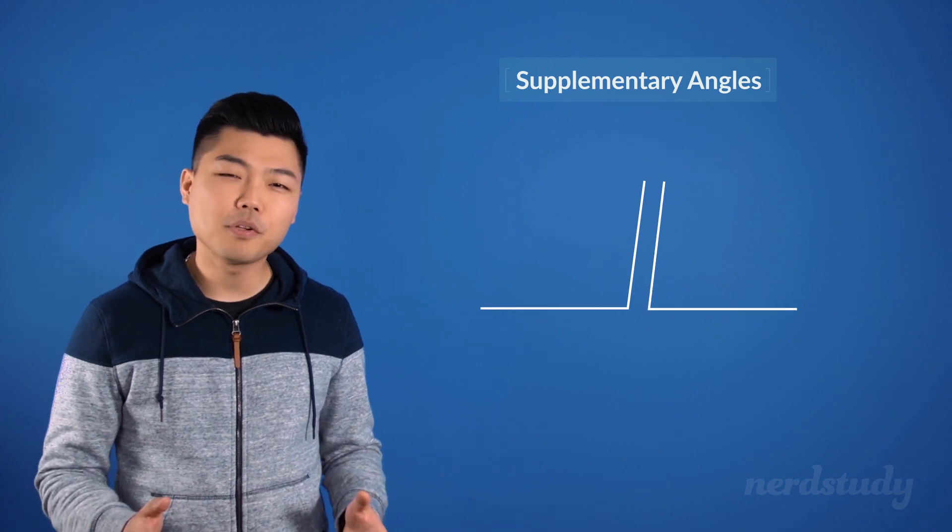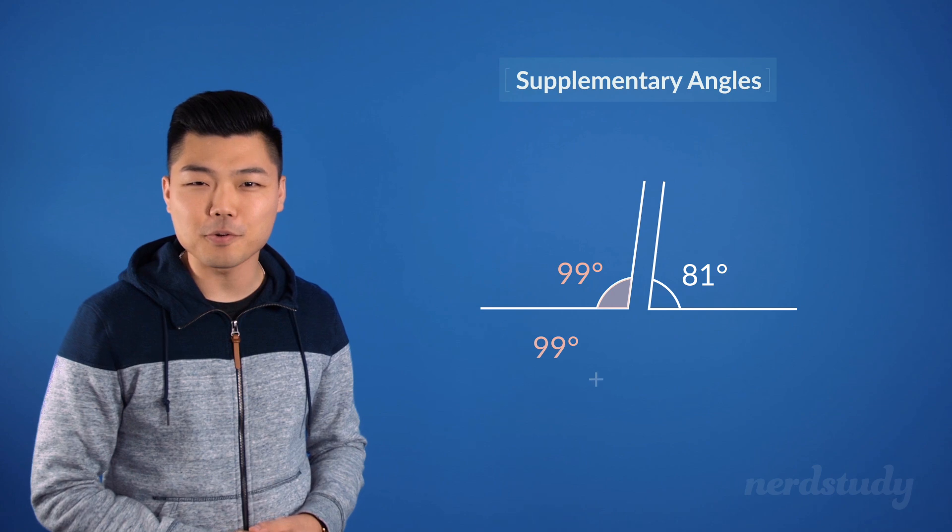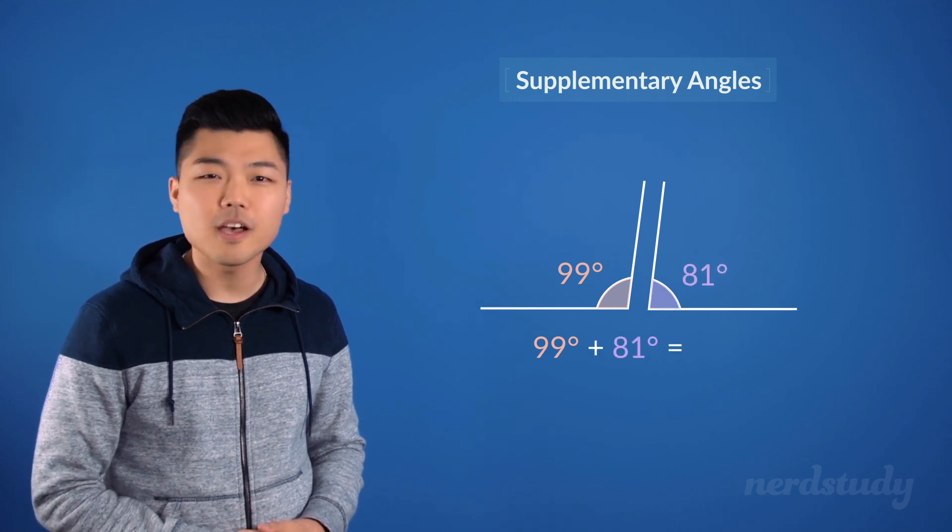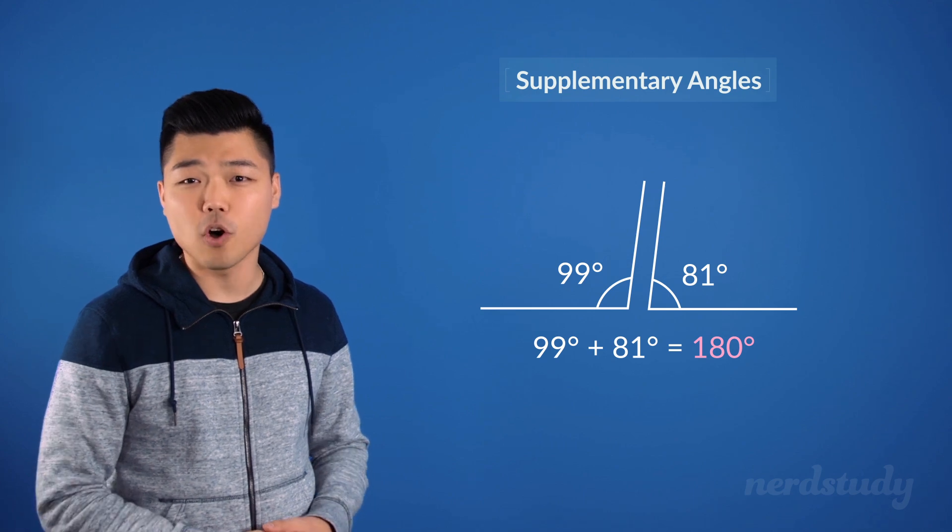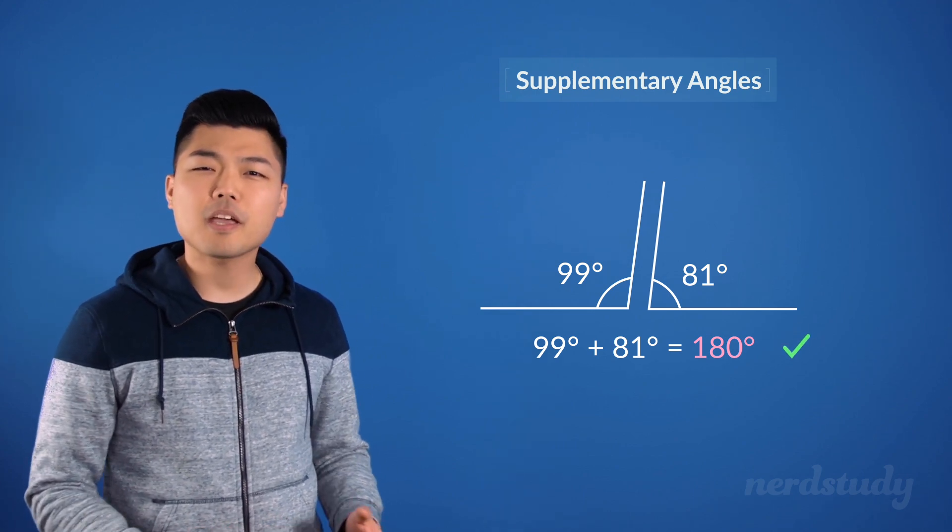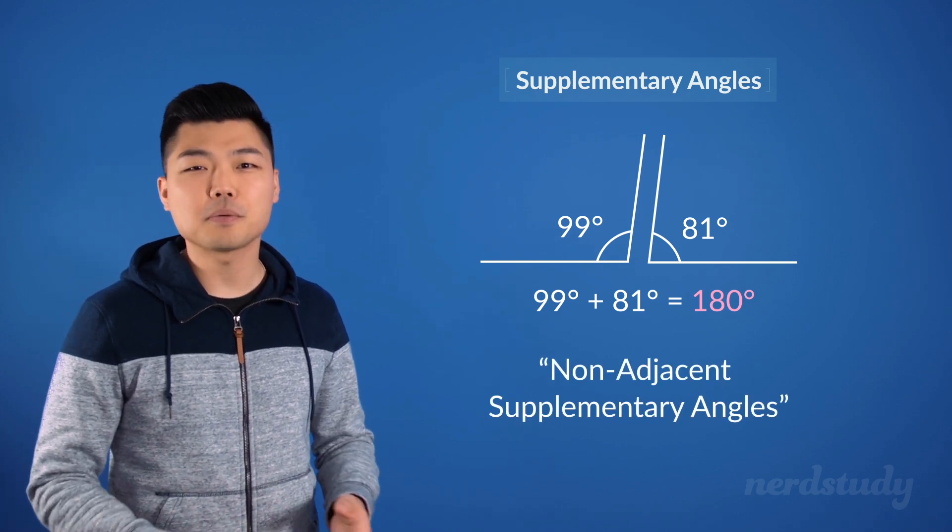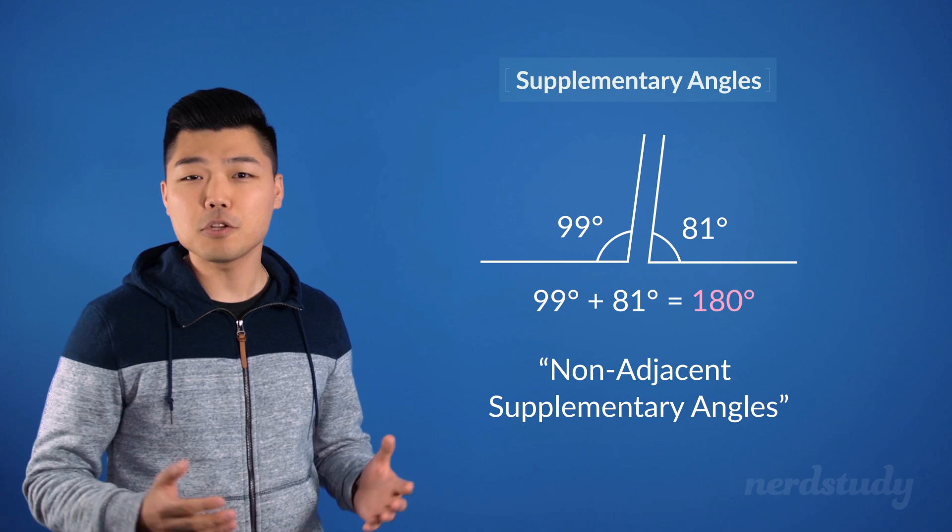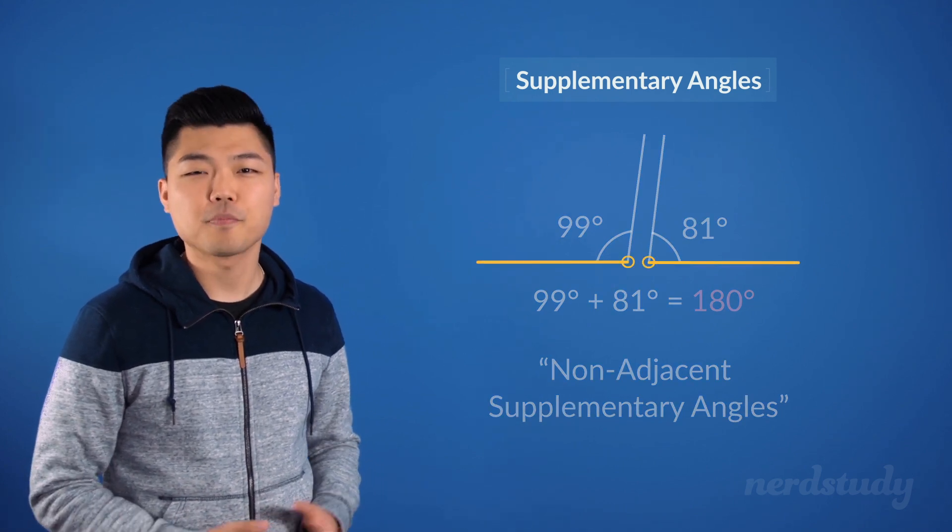Here's another example of a supplementary angle. If we add 99 degrees and 81 degrees, then we get 180 degrees, confirming that these are supplementary angles. But again, we can actually consider these non-adjacent supplementary angles, since they do not share a common side, nor a common vertex.